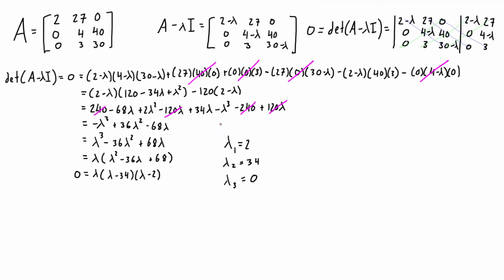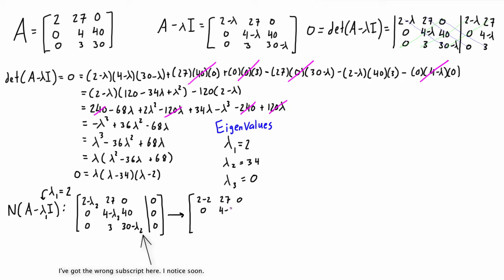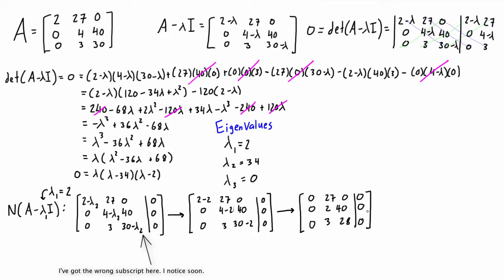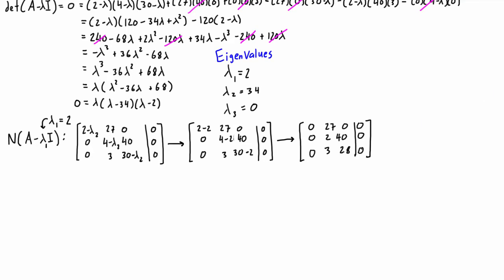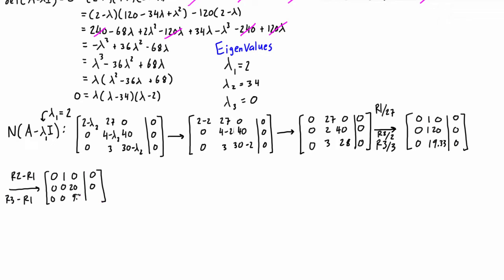These will be each of our three eigenvalues. Now to find a corresponding eigenvector for each eigenvalue, we go one at a time finding the null space of A minus λI, but each time substituting in the actual eigenvalue for λ. For the first eigenvalue, its value is 2, so we're going to plug in 2 into this expression. We're looking for the null space of this matrix, so we set it up as an augmented matrix with zeros on the right-hand side. The null space is going to be the eigenspace of this matrix. Performing elementary row operations, we reduce it down to this matrix.